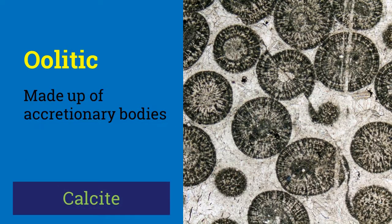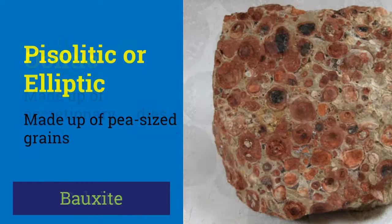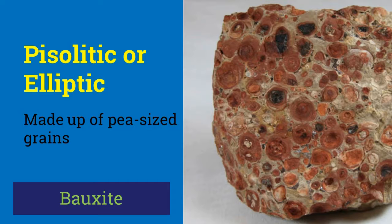Oolitic habit is of minerals that are made up of oolites, which are small, rounded, ovate accretionary bodies. This appearance is common to some iron-rich specimens made up of hematite, known as oolitic iron ore. Calcite may also be oolitic. Pisolitic habit is of minerals which appear to be made up of pea-sized grains. They have a structure similar to that of oolitic aggregates but are coarser in grain size. Bauxite is commonly pisolitic.